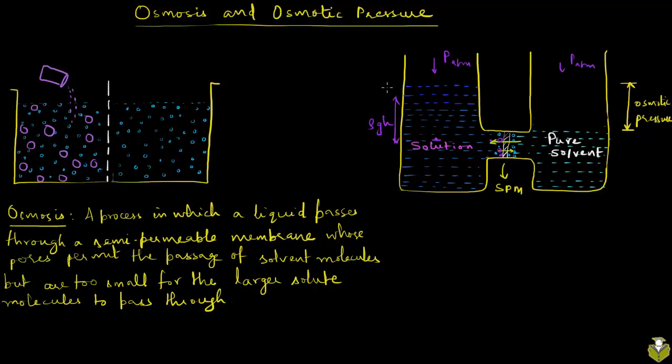So we said that this excess pressure, the osmotic pressure, is the excess pressure needed to prevent the osmotic flow in the first place.